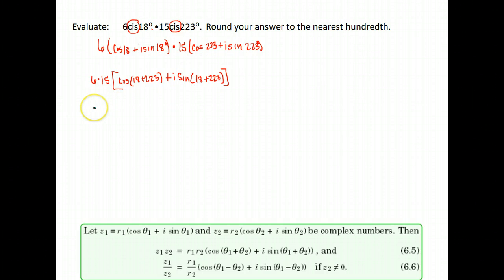6 times 15 gives me 90 in front here. And then when I add those angles together, I get 241. So I have the cosine of 241 plus i sine 241. Now again, it's asking me to round to the nearest hundredth. So I don't have exact values for the angle 241 degrees. So I just distribute the 90.